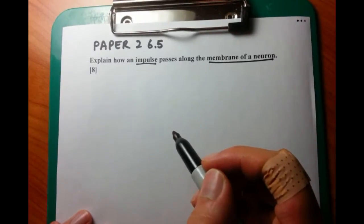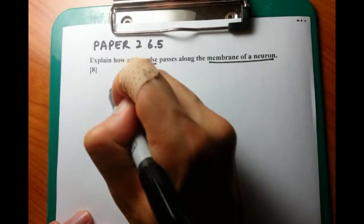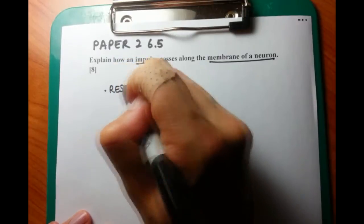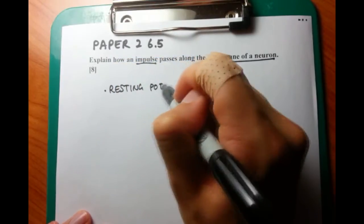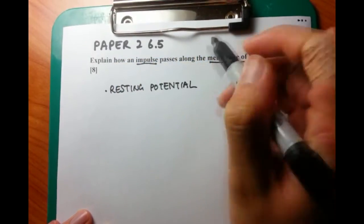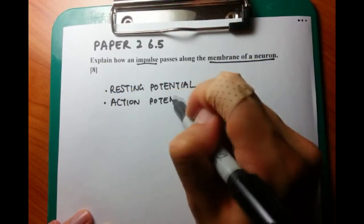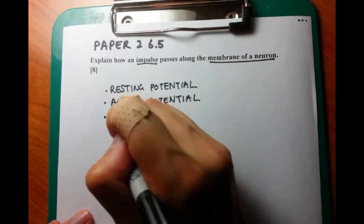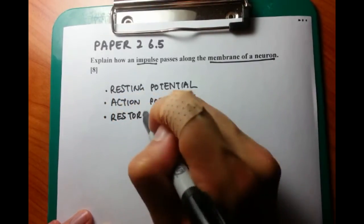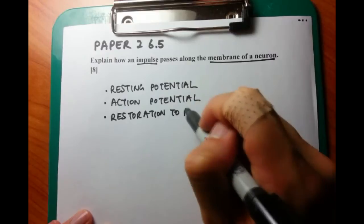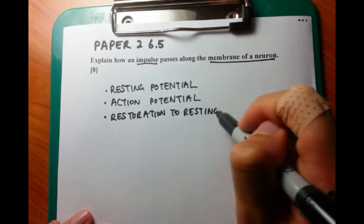I really enjoy teaching it and answering it as well. I want you to think about it in terms of what happens normally when it's at rest, so the resting potential. What happens when the membrane along the neuron gets activated, or an action potential. And finally, what happens when the action potential goes back down to normal, or the restoration to resting potential.